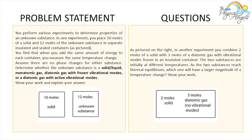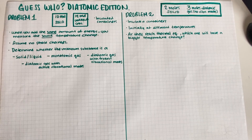This problem has two parts, so let's concentrate on part one. You perform various experiments to determine properties of an unknown substance. In one experiment, you place 10 moles of a solid and 12 moles of the unknown substance in separate insulated and sealed containers. You find that when you add the same amount of energy to each container, you measure the same temperature change. Assume there are no phase changes. Determine whether the unknown substance is a solid, liquid, monatomic gas, diatomic gas with frozen vibrational modes, or a diatomic gas with active vibrational modes.